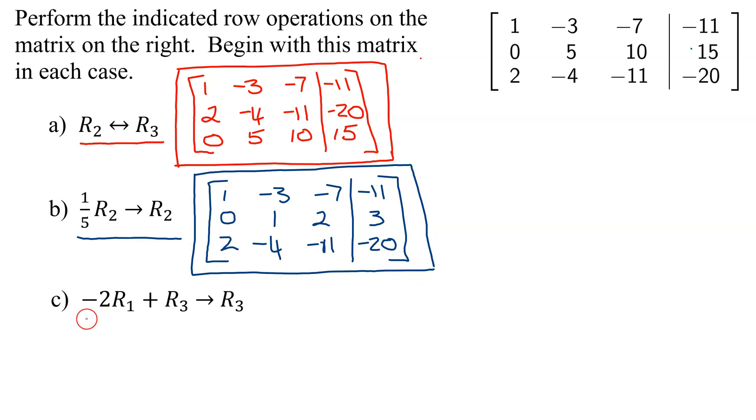Now looking at part C, we have to do negative 2 times row 1, add it to row 3, and put it in row 3. So rows 1 and 2 are going to stay the same. I'm starting with this matrix.